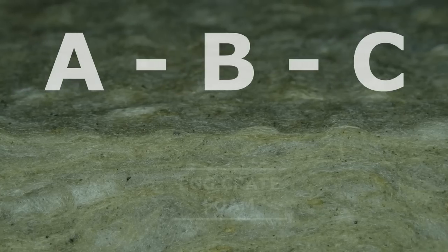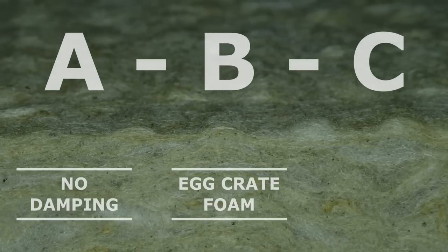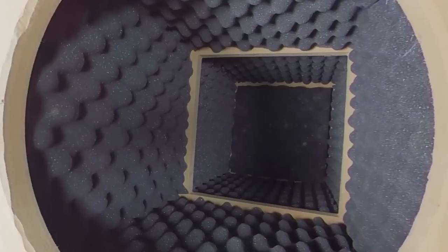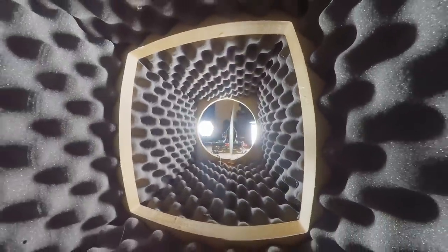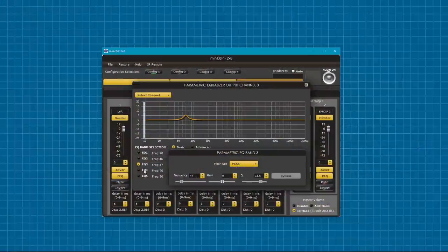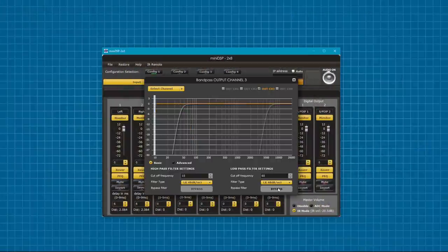And while we're at it, may as well do an A, B, C comparison with the foam, no insulation at all, and with the mineral wool. So, while the egg crate foam is still in the chamber, I'll go ahead and bypass everything on the DSP so that we're feeding the sub a flat signal and run a sweep.